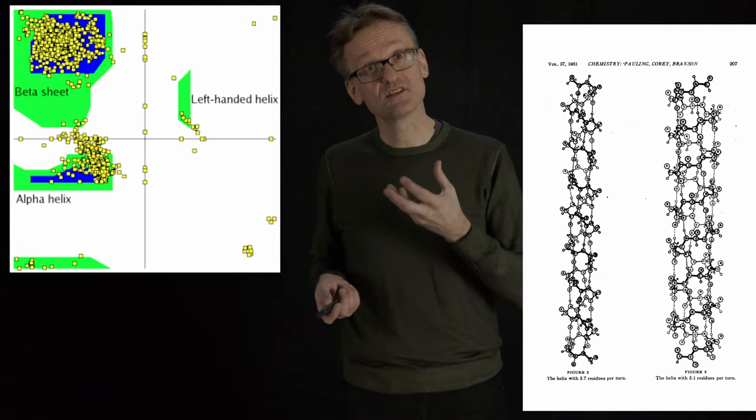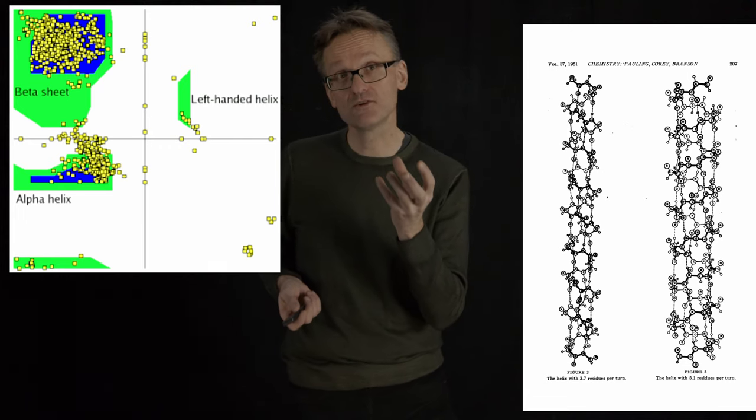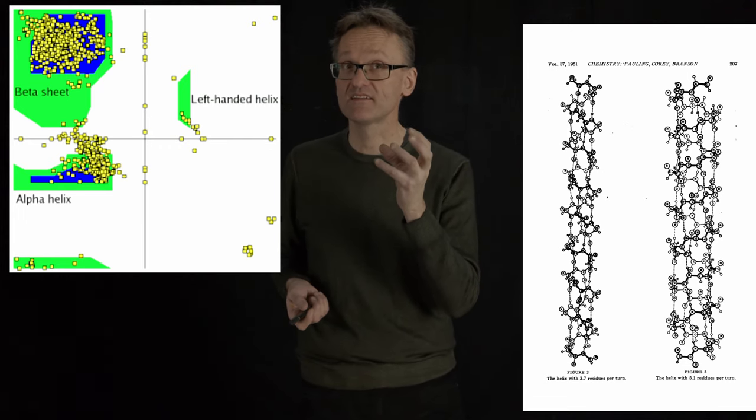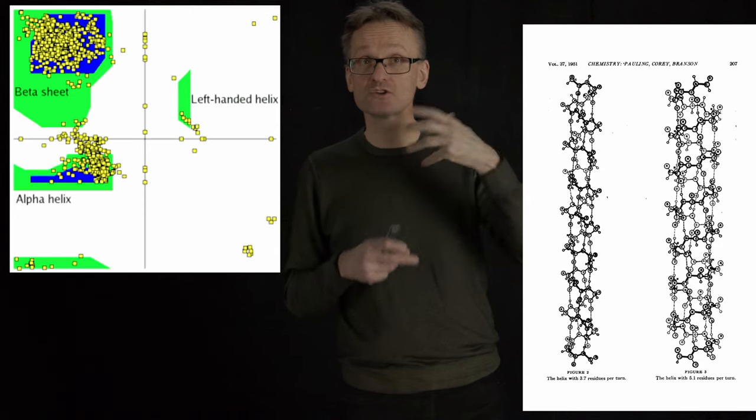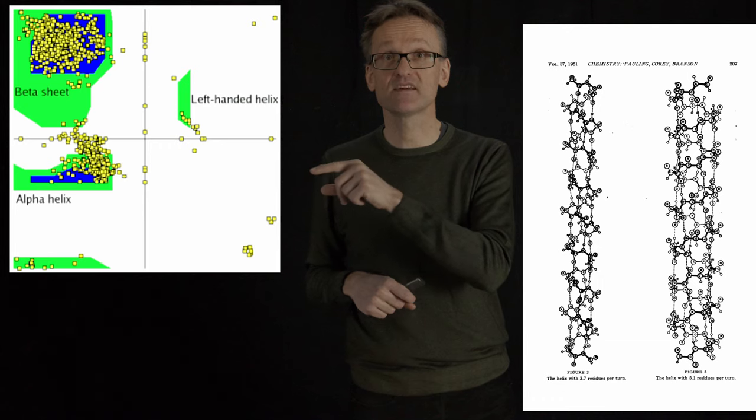The reason for that has to do with this chirality of the amino acids. And now we're coming back to that. So if the individual building block has a built-in handedness, if I then build larger building blocks from that fundamental building block, this handedness is going to stay built-in.